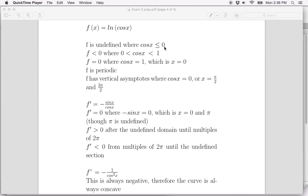It's undefined where cos x ≤ 0. We also know it's going to be negative where the inside is less than 1 but greater than 0. The function equals 0 where the inside is 1. Of course, it would be positive if the inside could ever be more than 1, but in this case it can't. So right off the bat, we know our function is never going to be positive.